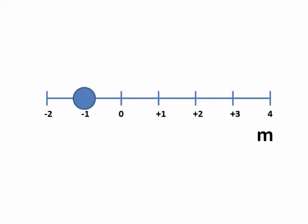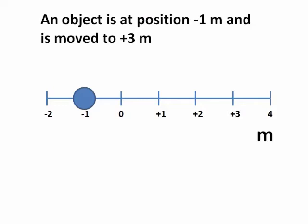Now consider an object that is at minus one on the number line. It's to the left of zero. And this object is moved to position plus three to the right.